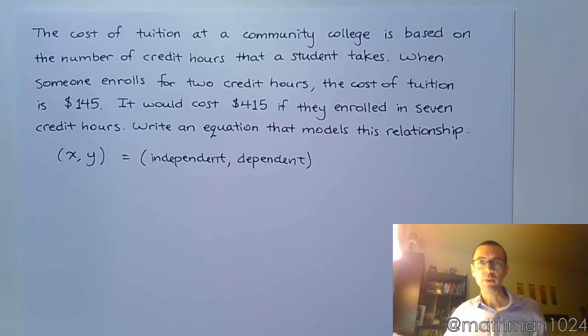So if I look at this, I've got two things that vary. I have the number of credit hours that I take, and I've got the cost. And which one of these do we usually have control over?